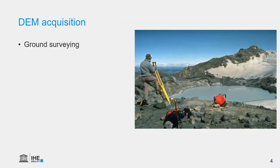So how do we acquire DEMs? The traditional way is using ground surveying, where we extrapolate from a known XYZ point to other locations, accurately measuring the position using a theodolite. This requires very skilled people and is also very laborious to cover a large area, especially in mountains. In the end, all these points need to be interpolated if we want to use it as a continuous raster in, for example, hydrological modeling.